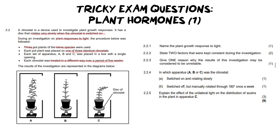Let's look for the clinostat that is moving. If the clinostat is rotating, then the sunlight coming through the opening is going to be evenly dispersed, and if the sunlight is evenly dispersed, then so are the auxins, which means the plant is going to grow straight. So B is going to definitely be our moving clinostat, because as it moves, each side of the plant gets an equal amount of sunlight and it grows straight.